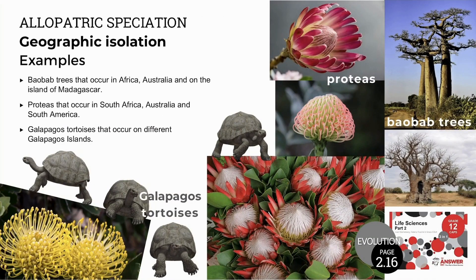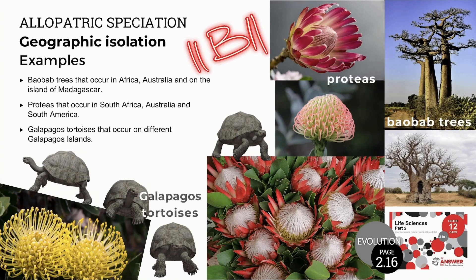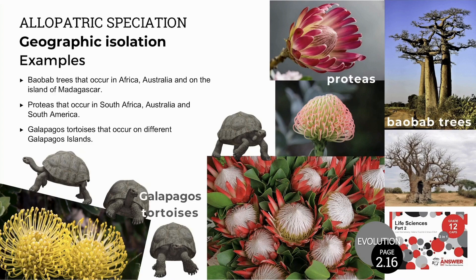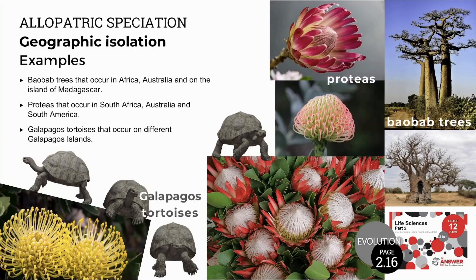Other examples of allopatric speciation, showing geographic isolation and always involving a barrier, include baobab trees — also known as upside-down trees — from Africa, Australia, and Madagascar; proteas, well known in South Africa but also occurring in Australia and South America; and the different tortoises studied by Darwin that occurred on various Galapagos islands.